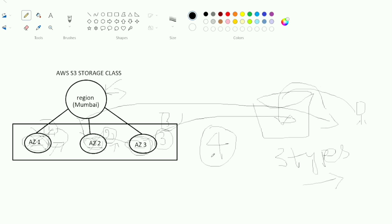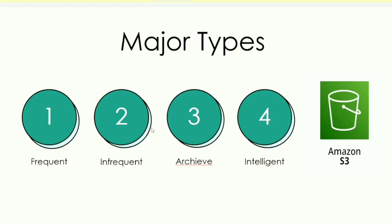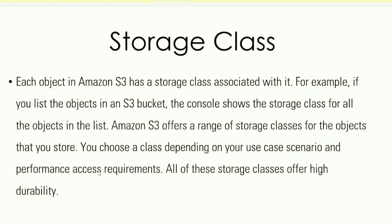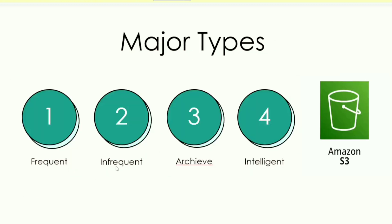In S3, there are 7 storage classes divided into 4 categories: Frequent, Infrequent, Archive, and Intelligent.